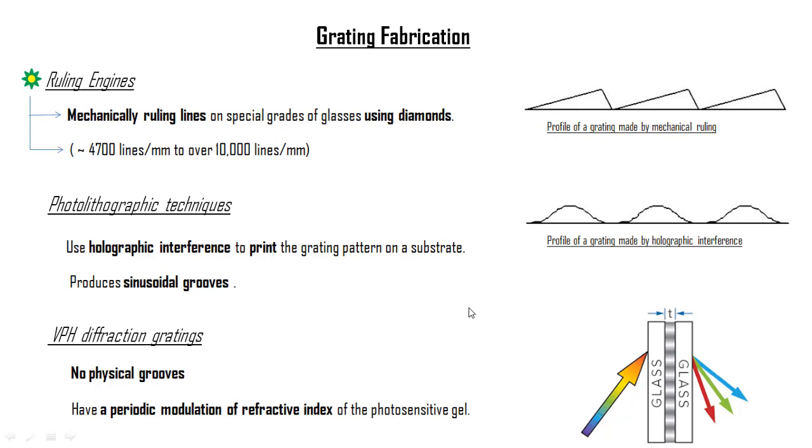Later, photolithographic techniques created gratings from a holographic interference pattern. Holographic gratings have sinusoidal grooves and may not be as efficient as ruled gratings. Many diffraction gratings use a photosensitive gel between two substrates. A holographic interference pattern exposes the gel which is later developed. These gratings are called volume phase holographic diffraction gratings or simply VPH gratings.